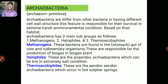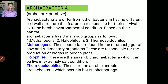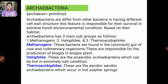Based on their habitats, Archaebacteria are classified into three types: Methanogens, Halophiles, and Thermoacidophiles. Methanogens are bacteria found in the gut of several ruminant animals like cows and buffaloes. They are also found in marshy areas. They are responsible for biogas production — the name Methanogens means they help in the preparation of methane.